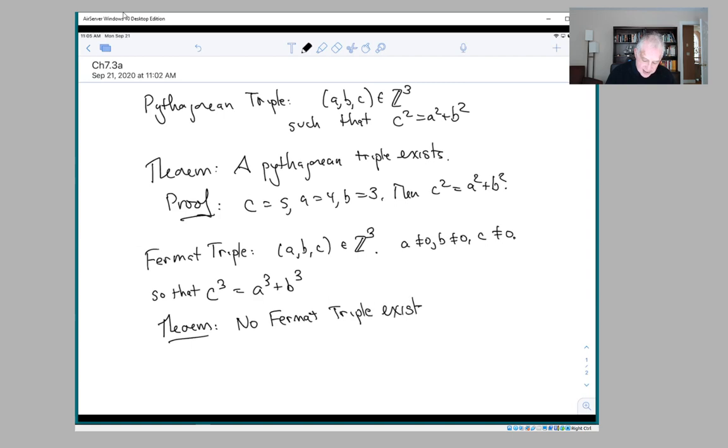So this is the negation of a there-exists statement. To prove that something exists, it's enough to give an example of it. To prove that something doesn't exist is often much harder, because what you have to show is—remember that the negation of a there-exists is a for-all.